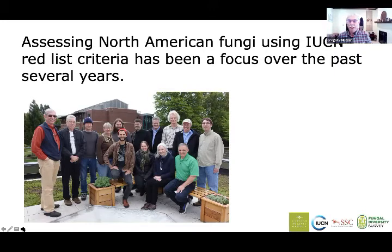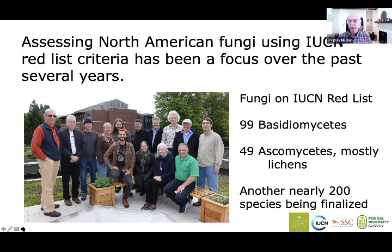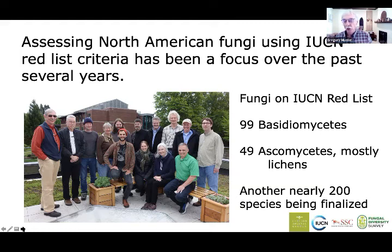So assessing North American fungi using IUCN criteria has been a focus over the past several years. We had a workshop a couple years ago in Corvallis. Currently on the IUCN global list there are 425 species in total. Of those, 148 are fungi from North America — 99 basidiomycetes and 49 ascomycetes, and most of those are lichens.